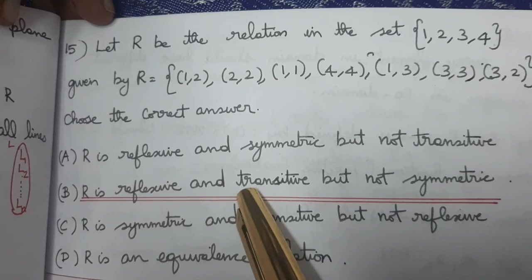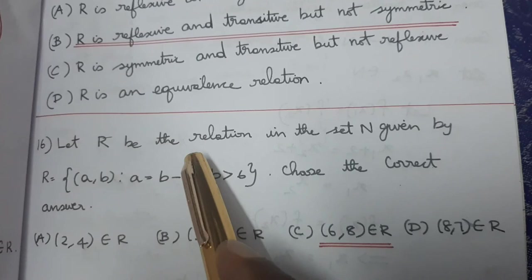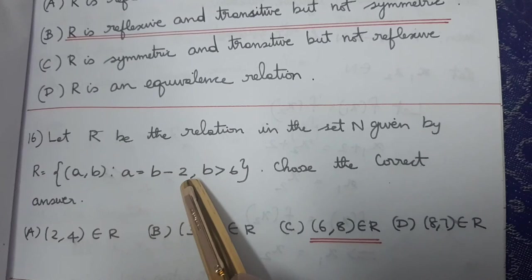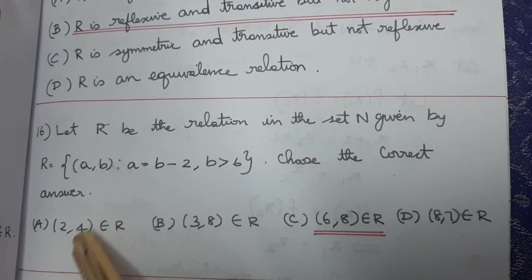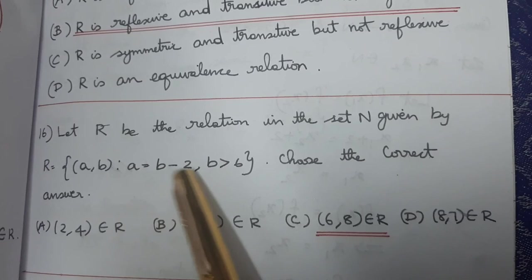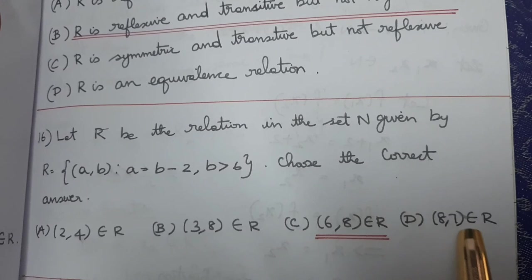R is reflexive and transitive but not symmetric. Exercise 1.6. Let R be the relation in the set N given by R equal to {(a, b) such that a equal to b minus 2, b is greater than 6}. Choose the correct answer. Since b is greater than 6 and a equals b minus 2, the answer is C.